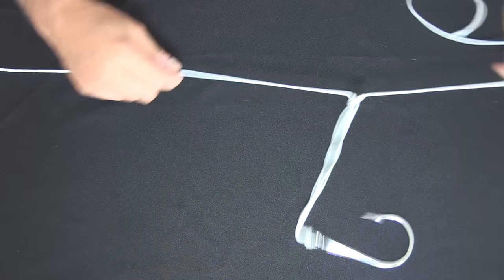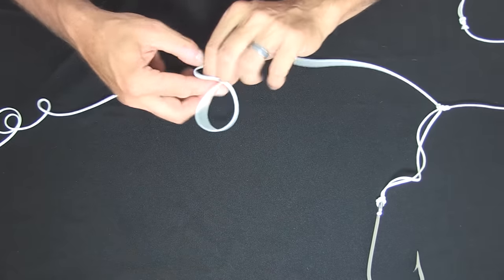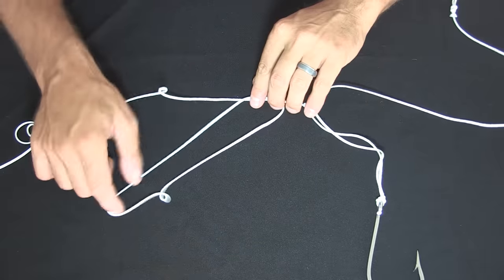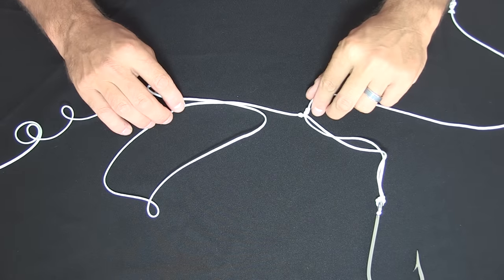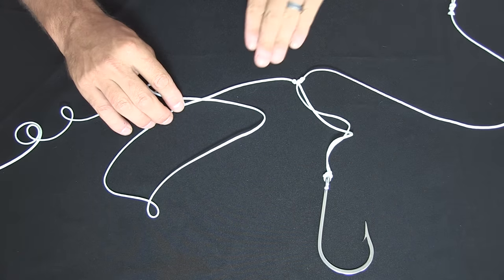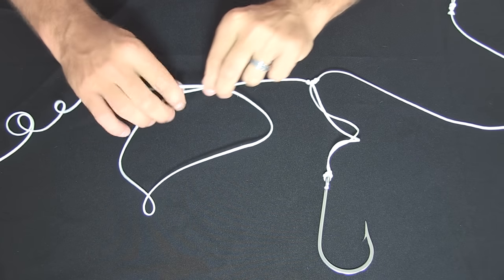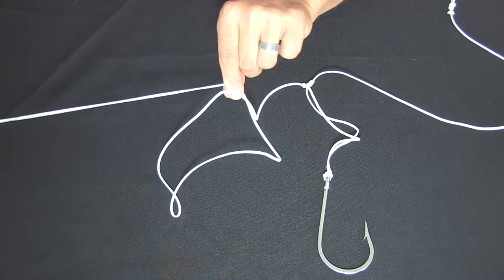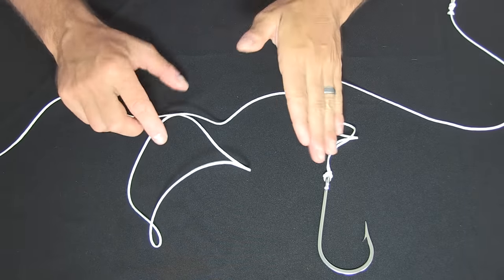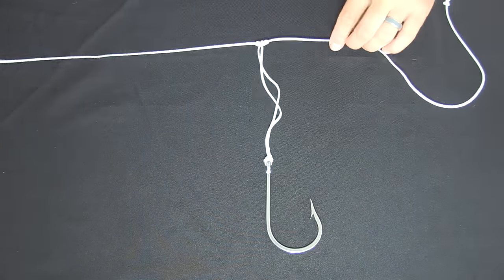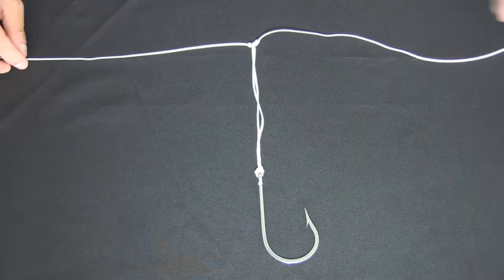You may want to create another dropper loop up further to create a double paternoster or double dropper loop rig. That's fine if you're chasing small fish but for large fish only run the one otherwise if you catch two big fish fighting against each other they'll often break on the top dropper loop because you're pulling from above that and you'll lose both fish. So for big hard fighting fish only run the one hook set like that.